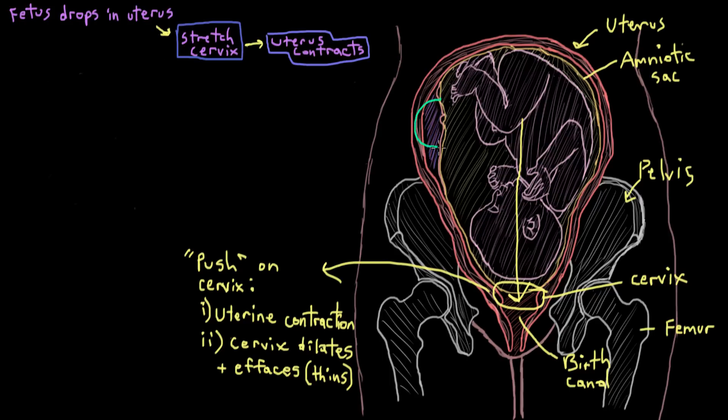By the way, the placenta starts to secrete higher levels of another hormone which we haven't actually talked about before called relaxin. This is one of those hormones that's definitely been named according to what it does. Relaxin does two things to do with pelvic bones. It loosens up some of the pelvic ligaments so that the pelvic bones can come apart a little bit to support the enlarging uterus.